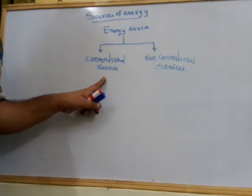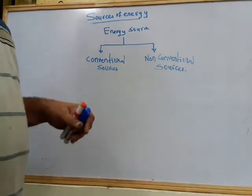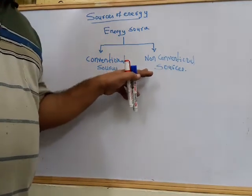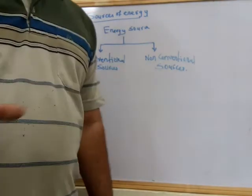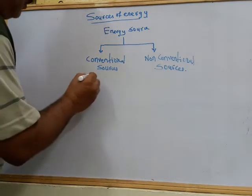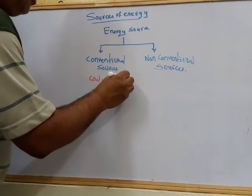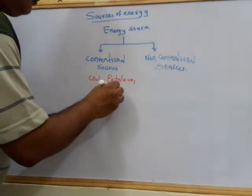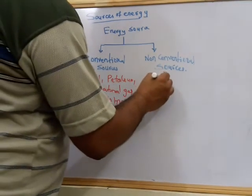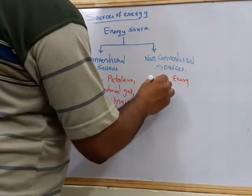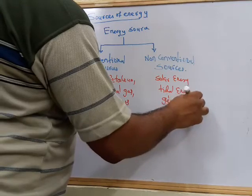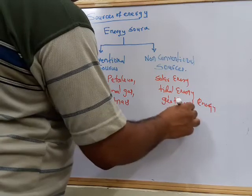Conventional sources of energy are those materials that are readily available in our neighborhood. Examples of conventional sources are coal, petroleum, natural gas, and biomass. Non-conventional sources include solar energy, tidal energy, geothermal energy, and nuclear energy.